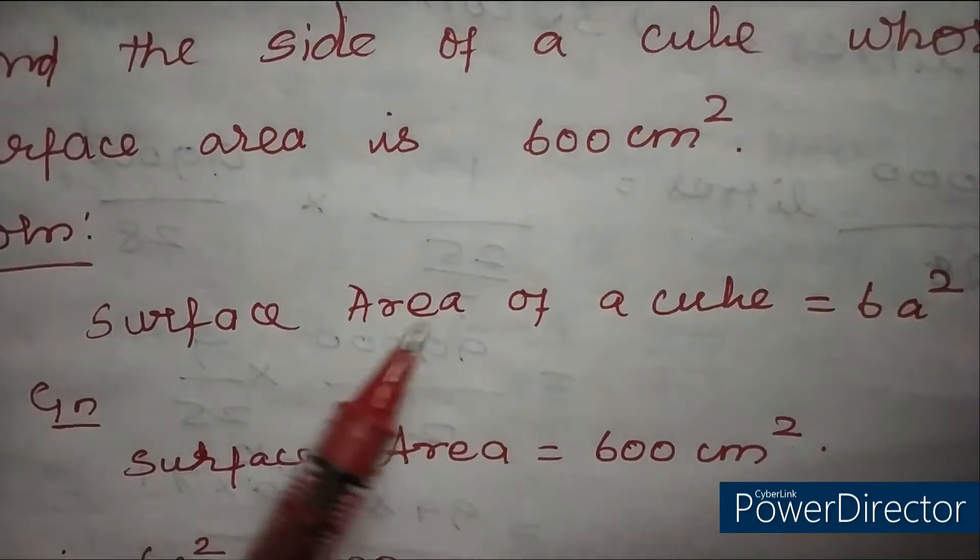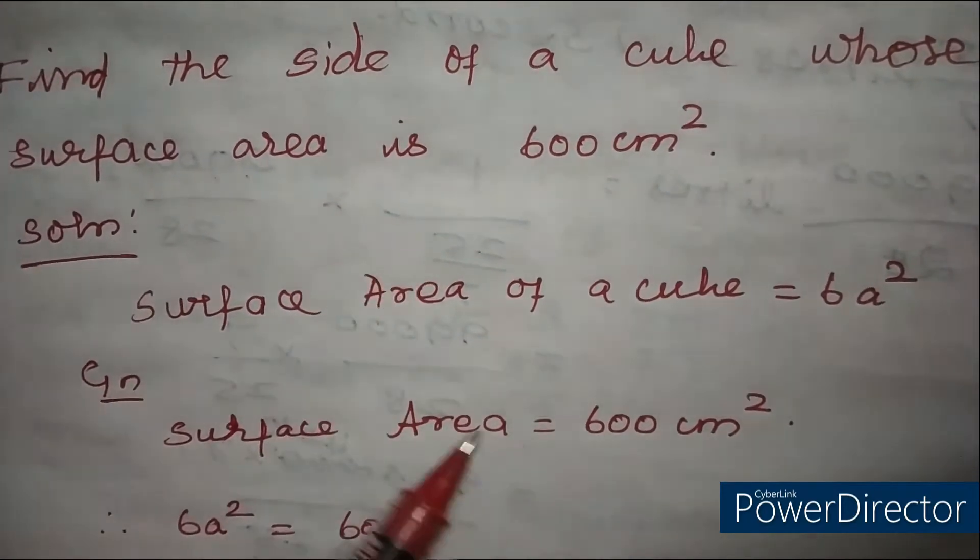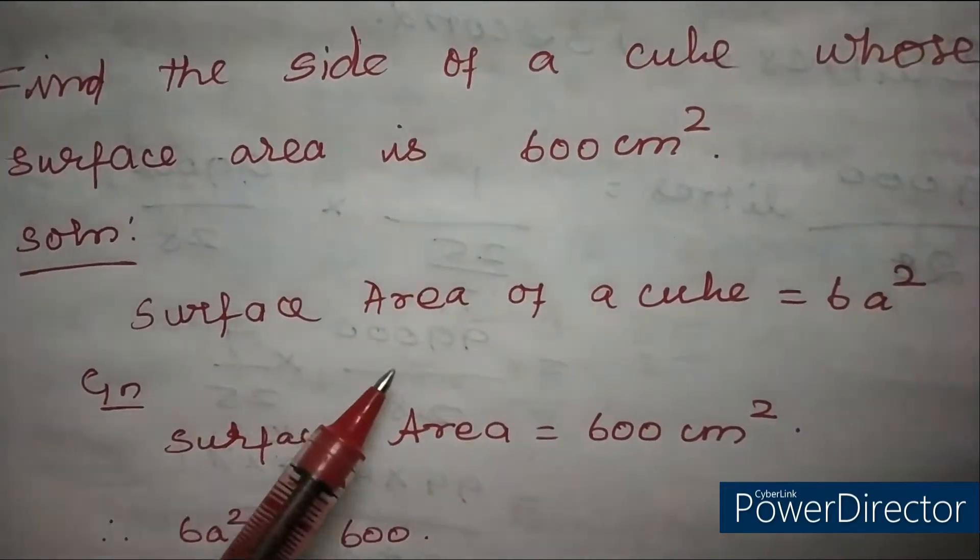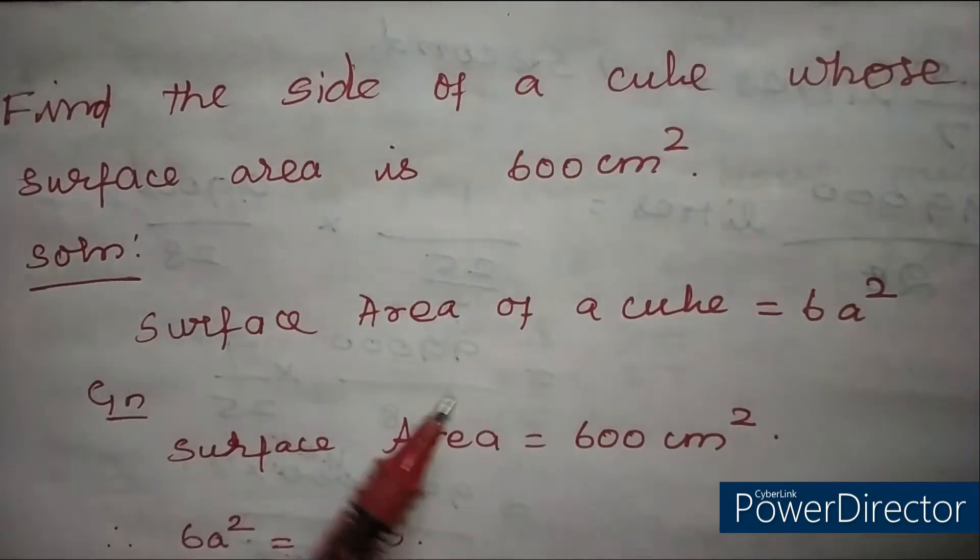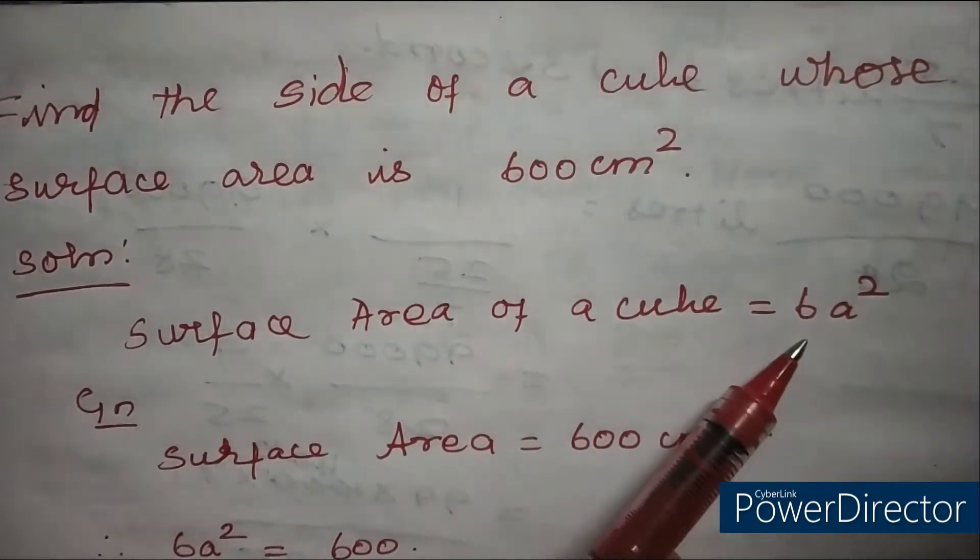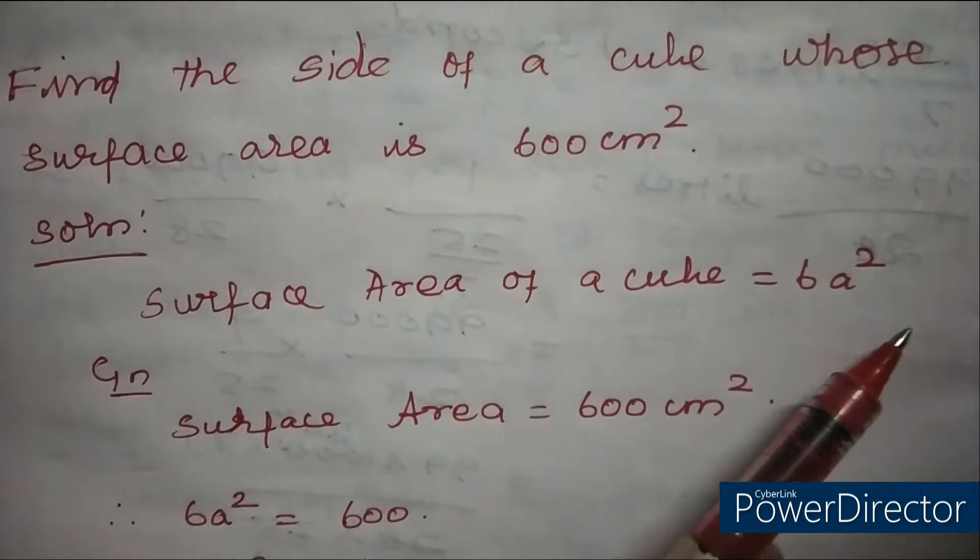What is given is the surface area of the cube. We have to know the formula for surface area of a cube. The formula is surface area of the cube equals 6a², 6a² square units.